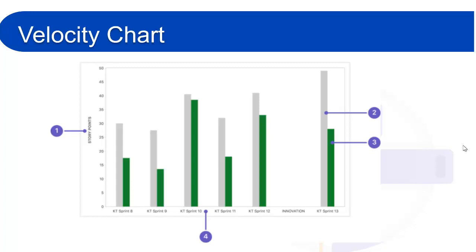Now, coming to the velocity chart — first, the estimation statistic as mentioned, and here we have seven sprints: one through seven. In every sprint you can see a gray bar. The gray bar for each sprint shows the total estimate of all the issues in that sprint when it begins. One important point: if you add any story or make any scope or estimation changes after the sprint has started, those will not be included in this total.